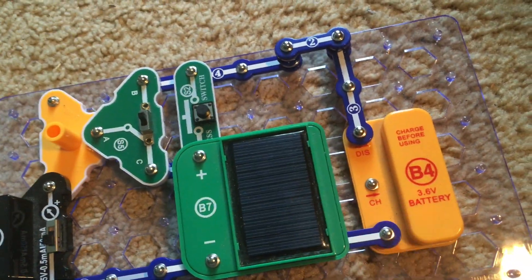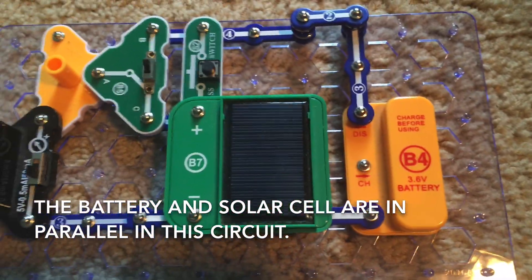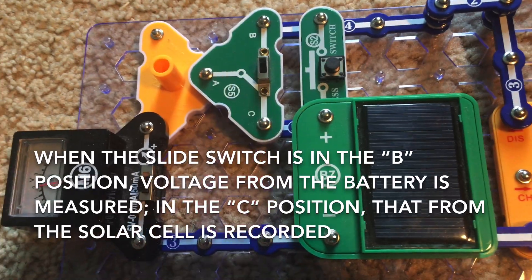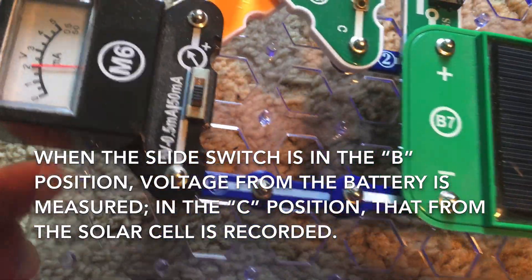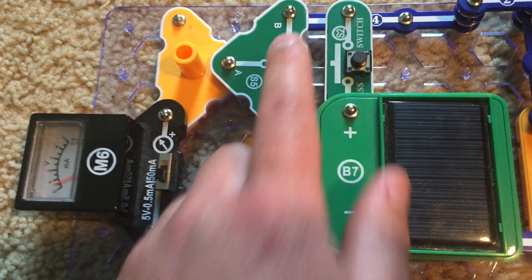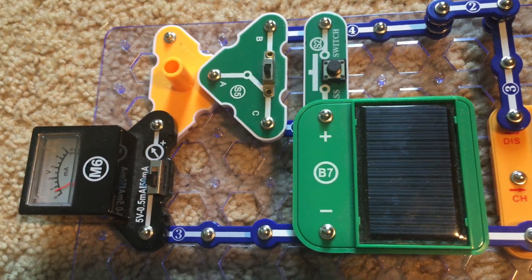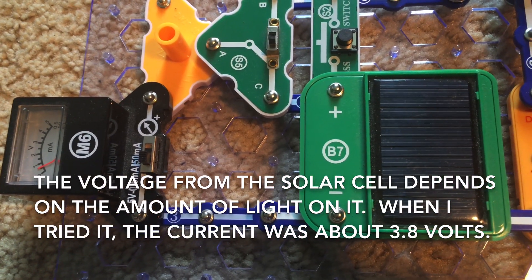Now the battery and solar cell are wired in parallel. When the slide switch is set to the B position, the meter records the voltage from the battery. When set to the C position, it measures the current of the solar cell and the current of the solar cell will depend on how much light is on it.